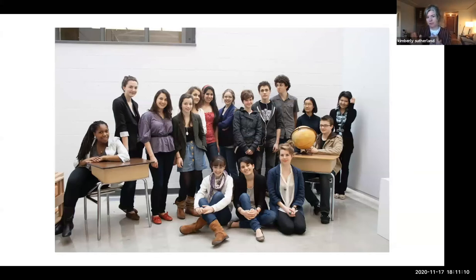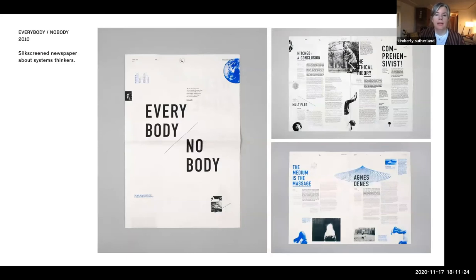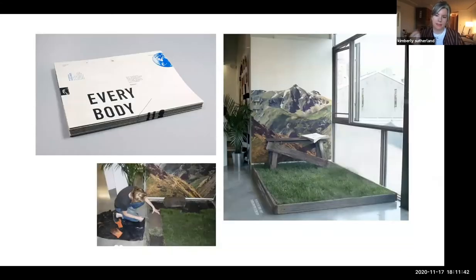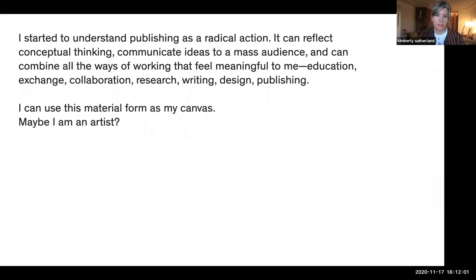As I was doing this workshop series, I was also collecting secondary research around different artists, creatives, thinkers, and educators who were using systems thinking in their work. I gathered excerpts from that research and made a silk screen newspaper called 'Everybody or Nobody' — a reflection of these different ways of working within the context of thinking about interconnection. I made a little reading environment for my thesis exhibition that people could go and read the books in. It was the funnest project I'd ever worked on. I started to understand publishing as a radical action — the fact that it can reflect conceptual thinking, communicate ideas to a mass audience, and combine all the ways of working that feel meaningful: education, exchange, collaboration, research, writing, design, and publishing.